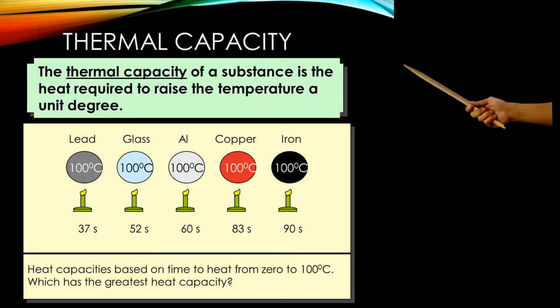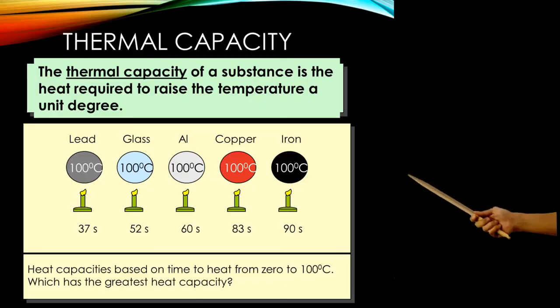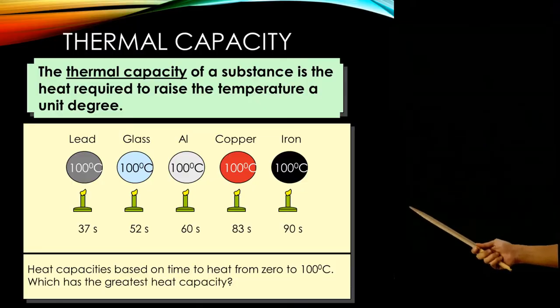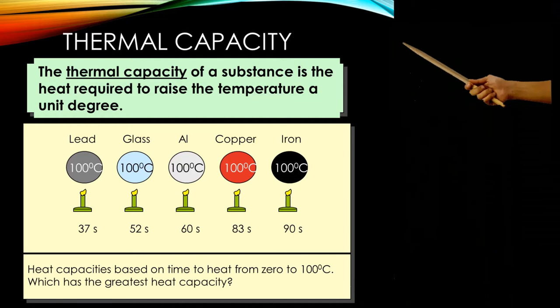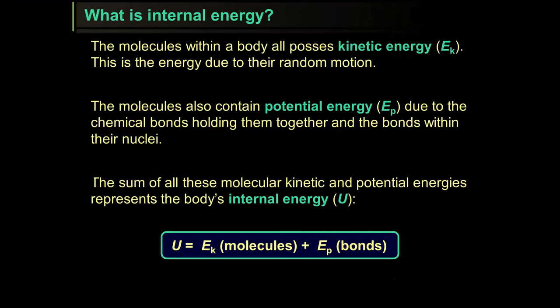Let's discuss what thermal capacity means. The thermal capacity of a substance is the heat required to raise its temperature by one unit degree. To elaborate more about thermal capacity, we should recall the concept of internal energy.